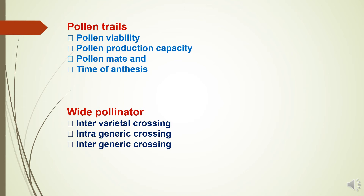The third pollen trait is pollen mate — meaning the ability of pollen to mate or contaminate another field. The fourth pollen trait is time of anthesis, which also affects contamination chances. If the contaminant plant and seed production plants have the same time of anthesis, there will be maximum chances of contamination, and in such a case we have to increase the isolation distance.